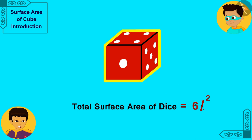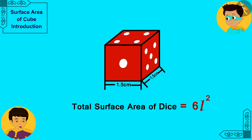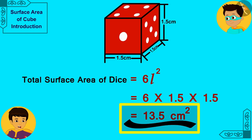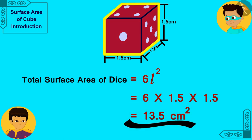The length of the side of this dice is 1.5 cm. In this way, the total surface area of this cubic dice is 13.5 cm². This means we will need 13.5 cm² of paper to cover this dice completely.